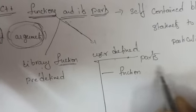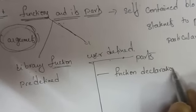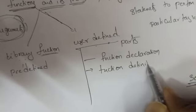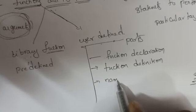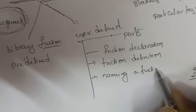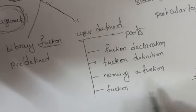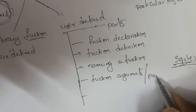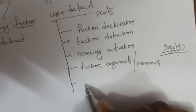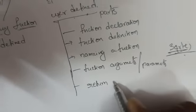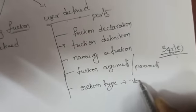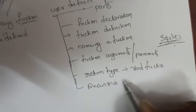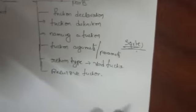The various parts are: function declaration, function definition, naming a function, function arguments — whatever values you are sending, those are called function arguments or function parameters — and return type. In the return type, the void keyword is also used. Void functions are also used. And another one is recursive function, also called function recursion. So these are the various parts we use when defining any function.